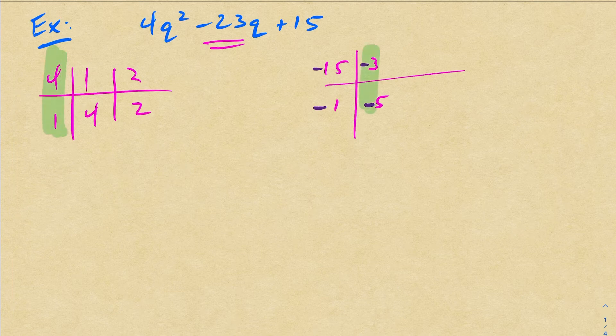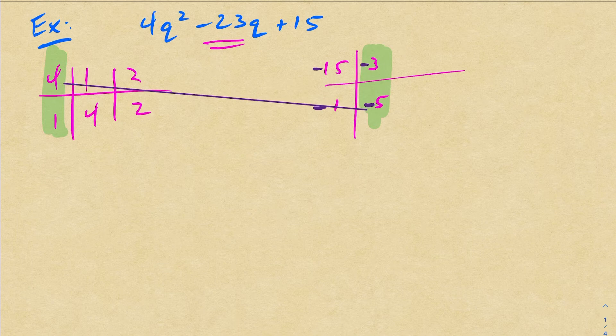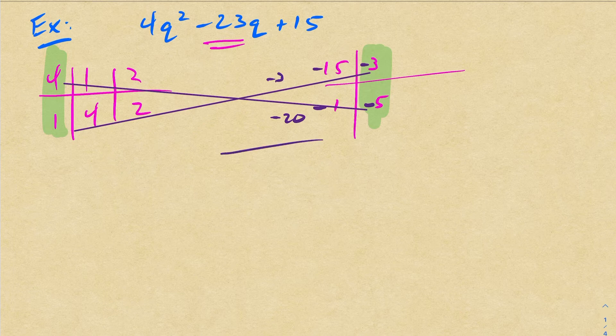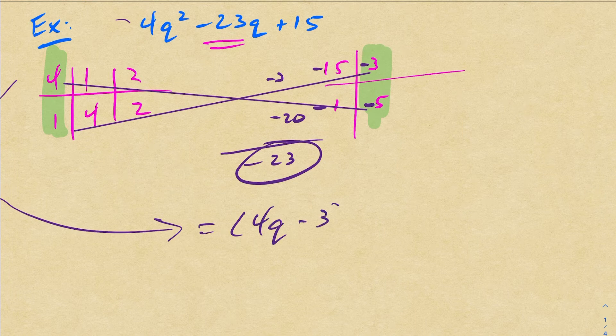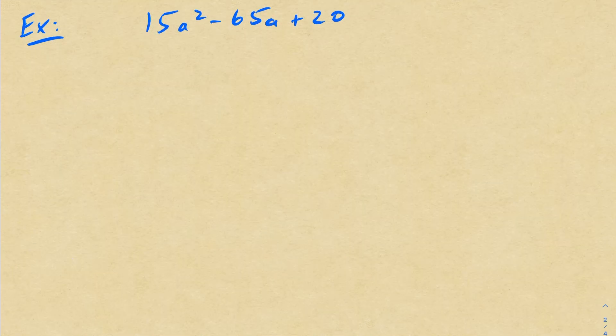Now notice here, 4 times negative 5 is negative 20. And then we have here 1 times negative 3 is negative 23 if I add that. So again, factoring this one, reading this from left to right, you're going to get 4Q minus 3 times Q minus 5. Okay, let's try another one.